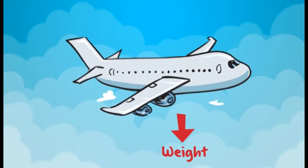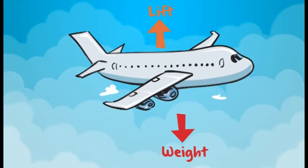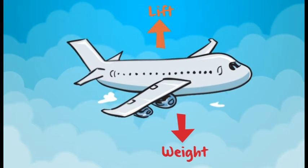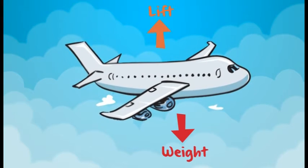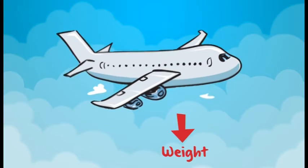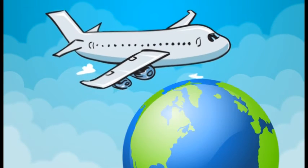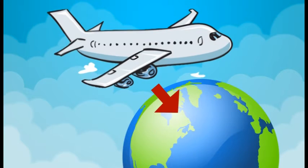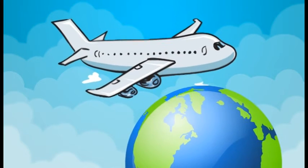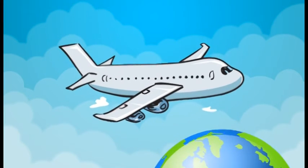Weight forces oppose the lift and act downward through the aircraft's center of gravity. Weight is a force that is always directed toward the center of the Earth — it pulls the aircraft down due to gravity.